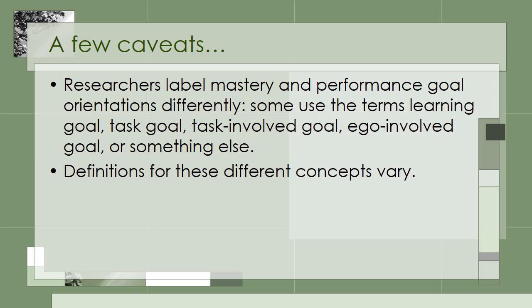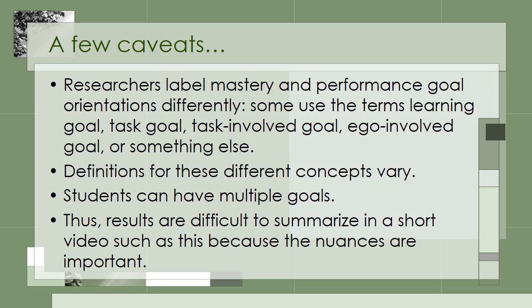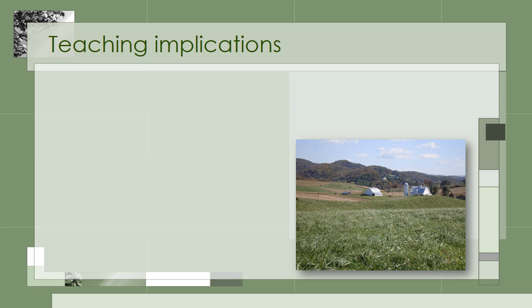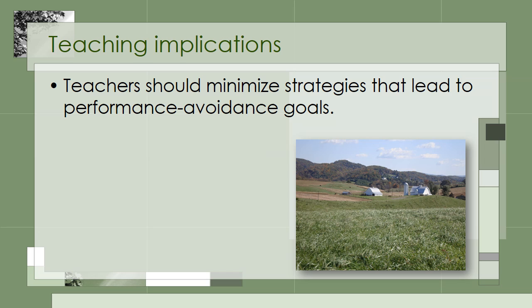Definitions for these different concepts also vary. In this video, I've tried to use definitions that are generally the most commonly used and accepted. Also be aware that students can have multiple goals, so results are difficult to summarize because the nuances are important. I encourage you to examine specific research studies if you're really interested in goal orientation theories. As with most motivation theories, researchers have found that instructors can have an impact on students' goal orientations. The difficult question is what should instructors do? There's pretty good evidence that performance avoidance goals are not good, so we can identify some teaching strategies that may minimize the chances that students will adopt performance avoidance goals and that will be more likely to promote mastery goals.